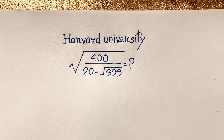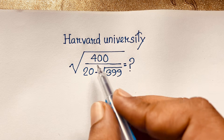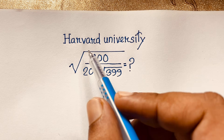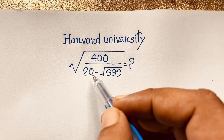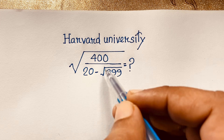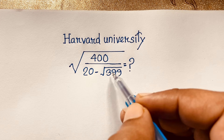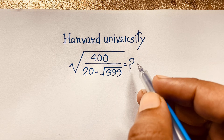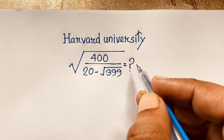Hello everyone, welcome to Russell's classroom. Today we are solving an interesting radical math question, which is: square root of 400 over 20 minus square root of 399. What is this equal to? How to solve this interesting radical math problem?